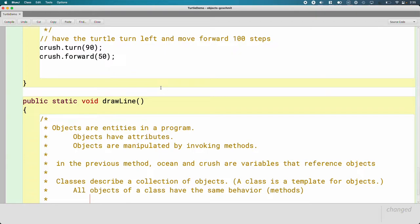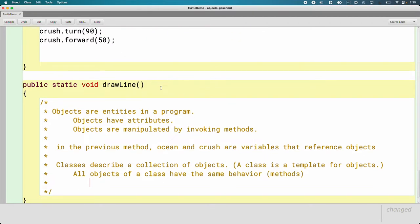So objects that come from the same class have certain things in common. All objects of a class have the same behavior. What I mean by that is they have the same methods. All objects of the turtle class can move forward, can turn left, can pick the pen up.